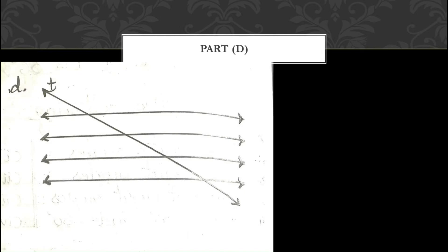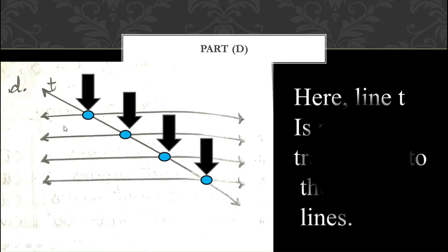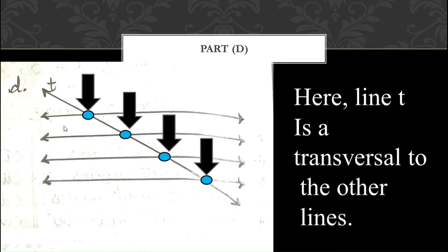Now let us move on to part D. Here you can see there are more than 2 parallel lines, and line T is a transversal to those other lines — it is cutting them at multiple points. So yes, line T is a transversal to the other lines in part D.